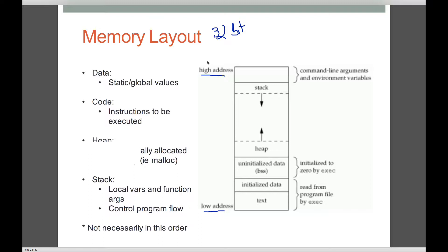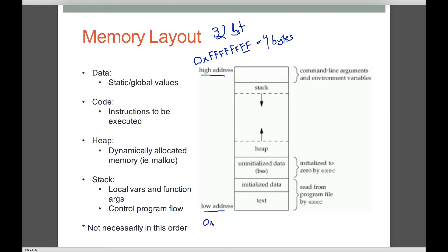Think about pointers, because that's really what we're talking about. The highest address in a 32-bit space is 0xFFFFFFFF — each hex digit is four bits (a nibble), two hex digits is one byte, so four groups of two gives us four bytes or 32 bits. The lowest address is just zero. So higher addresses are at the top, lower addresses at the bottom. As we reference things from a higher address to a lower address, we decrement; going the opposite direction, we increment.